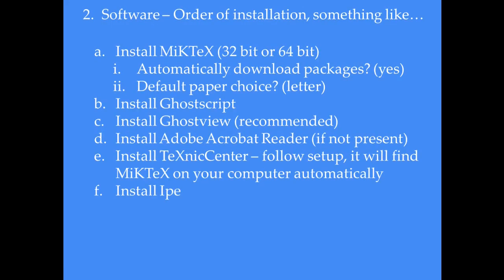If you're going to install the software, you'd want to install MiKTeX first. With most modern computers you'll probably use the 64-bit version. During installation, when it asks about automatically downloading packages, say yes. When it asks about default paper choice, choose letter — that means you'll be generating documents sized for 8.5 by 11 paper. You also want to install GhostScript, GhostView, Adobe Acrobat Reader if you don't have it already, TeXnicCenter, and IPE.